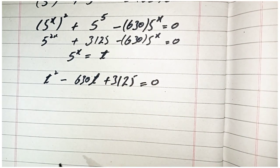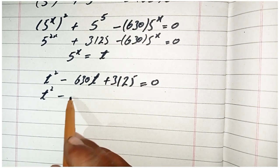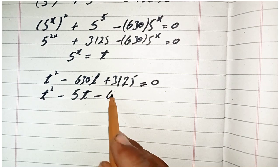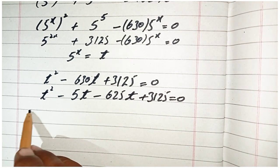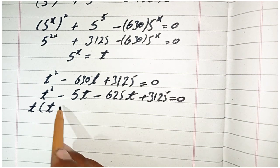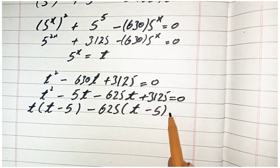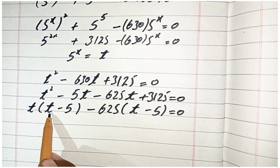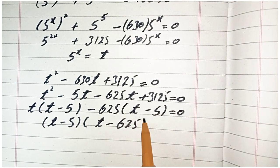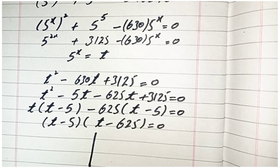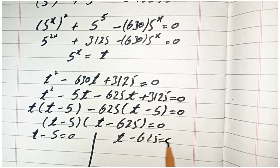We factor this quadratic: t squared minus 5t minus 625t plus 3125 equals 0. Taking t as common from the first two terms and 625 as common from the last two, this becomes t(t minus 5) minus 625(t minus 5) equals 0, giving the two factors (t minus 5)(t minus 625) equals 0.